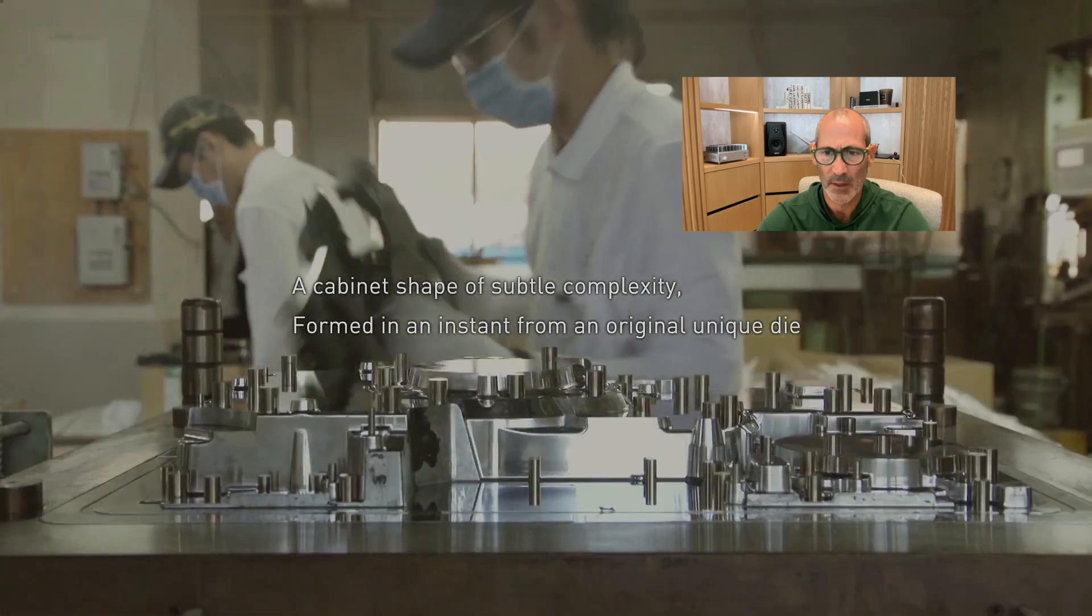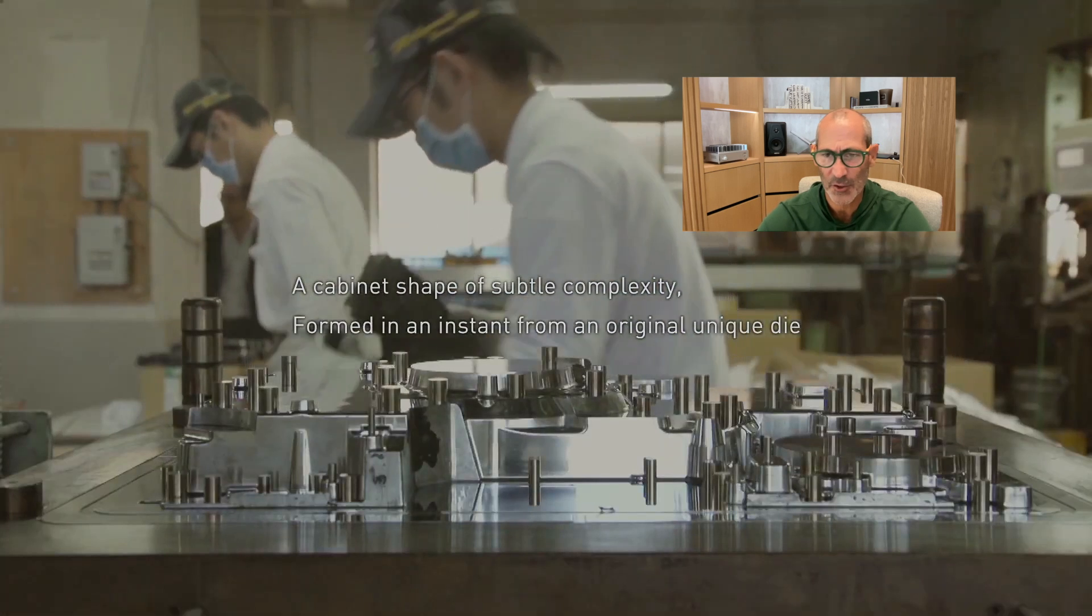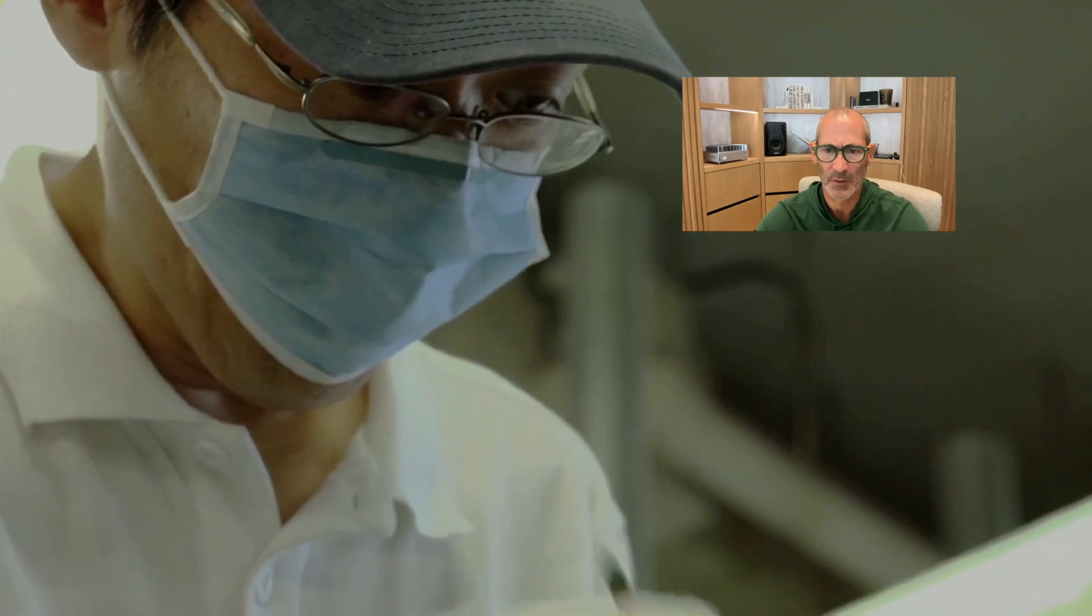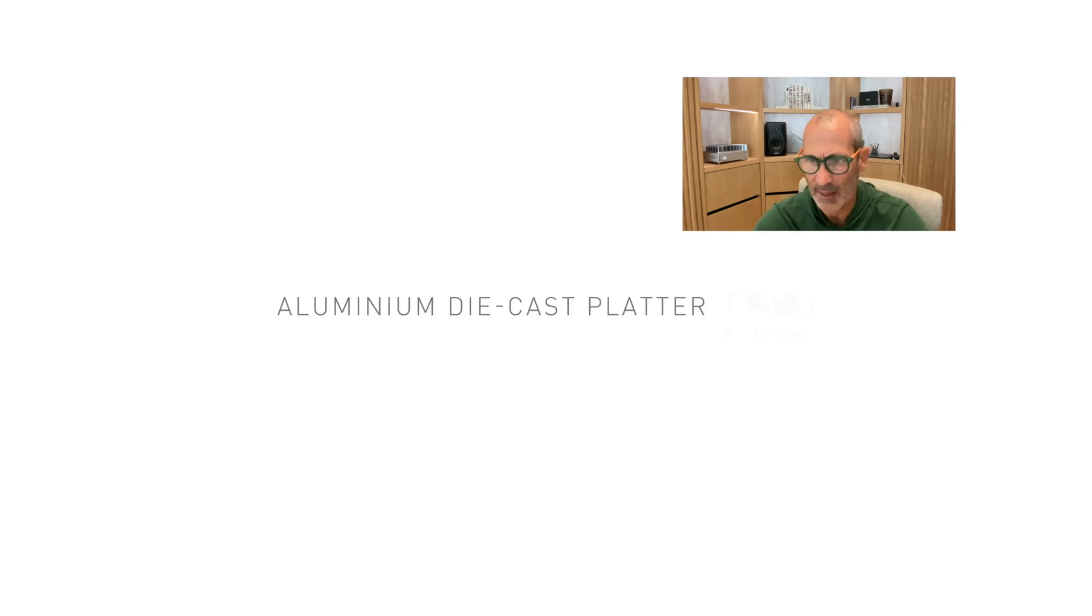Looking here, we see the technician cleaning the flashing from the BMC. This is not a precision part. This is just used to add dampening and weight. So he's cleaning sort of the flashing that comes out of an injection mold with a file. And soon after, we move on to the aluminum die-cast platter.